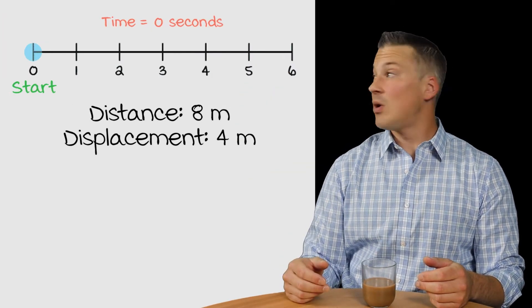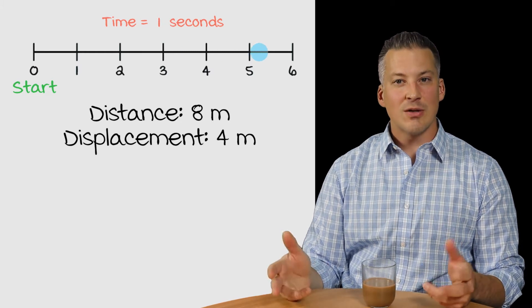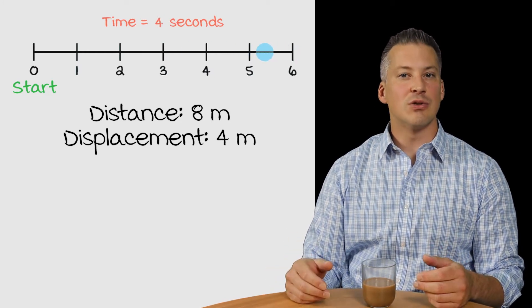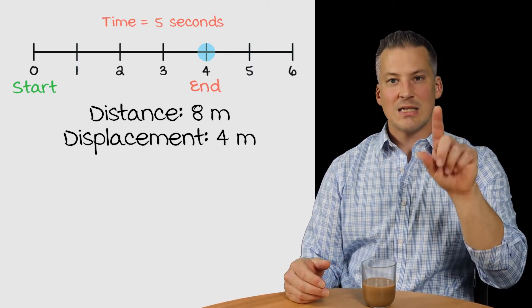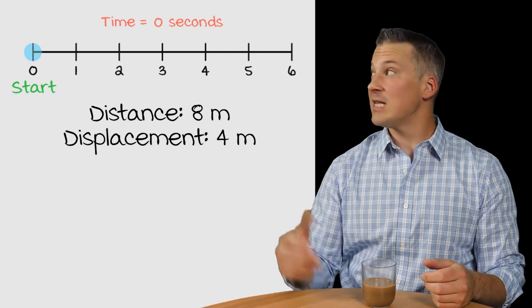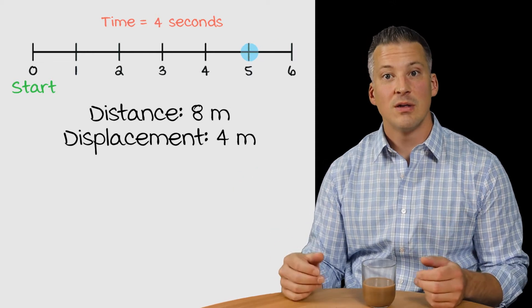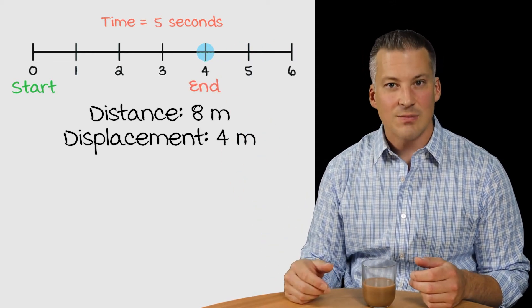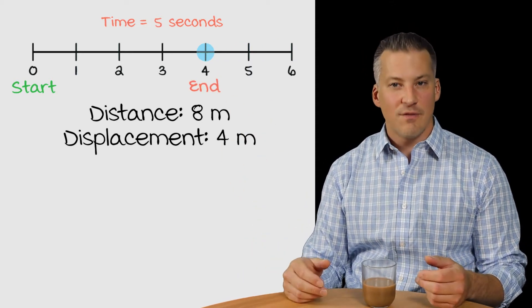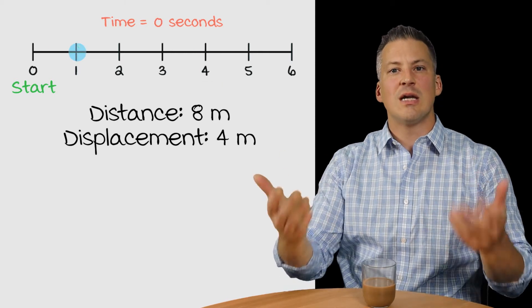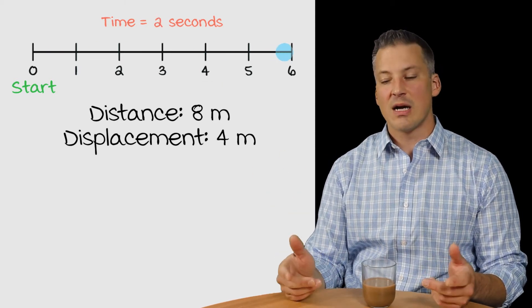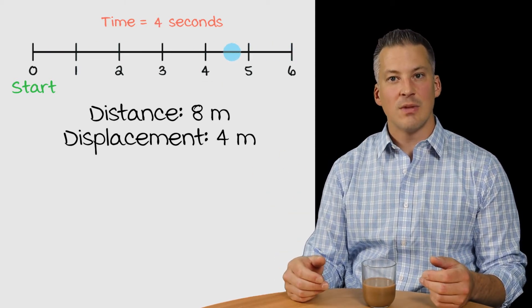Okay, so we know that we already calculated that the distance that this ball is traveling is going to be 8 meters, and we know the displacement of the ball is going to be 4 meters. Now, let's add in one other piece of information. Let's say that it takes the ball 5 seconds to cover the distance of 8 meters or the displacement of 4 meters. The question is then how do we calculate the speed of the object, or how do we calculate the velocity of the object?